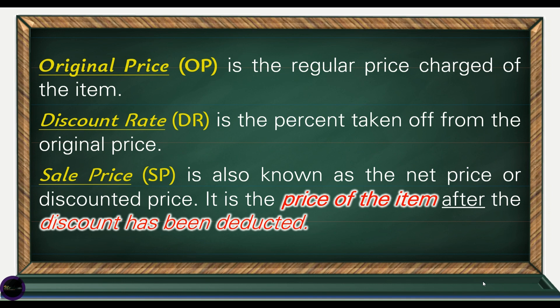Here are the other terms used in solving discount problems. Original price, or OP, is the regular price charged for the item. Discount rate, or DR, is the percent taken off from the original price. Sale price, or SP, is also known as the net price or discounted price — it is the price of the item after the discount has been deducted.